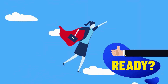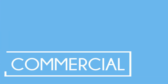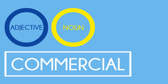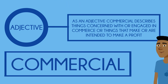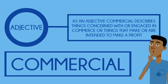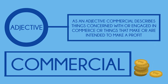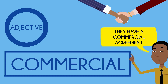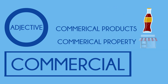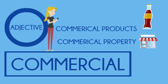Let's get started with our first word which is 'commercial'. Commercial is an adjective and a noun, but we're going to take a look at the adjective definition first. As an adjective, commercial describes things concerned with or engaged in commerce, or things that make or are intended to make a profit. Our first example sentence is: they have a commercial agreement. With this adjective it is common to see the terms 'commercial products' or 'commercial property'.